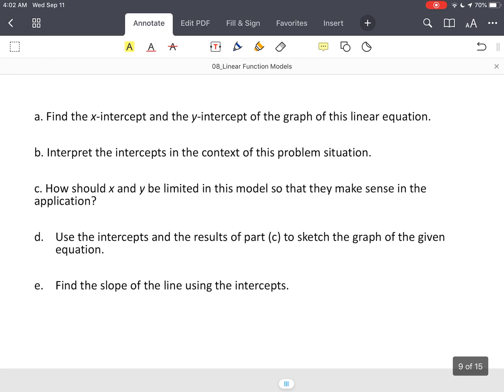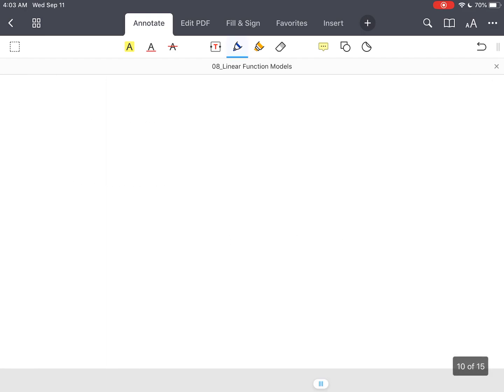Now we want to find the x and y intercept of the graph of this linear equation. We want to interpret the intercepts in the context of this problem situation, and then we're going to limit our x and y based on this model. Then we're going to use the intercepts and the results from part C to sketch the graph. And then finally, we want to find the slope of the line using the intercepts, but that's kind of given to us. We'll walk our way through each part individually. So let's go with part A.